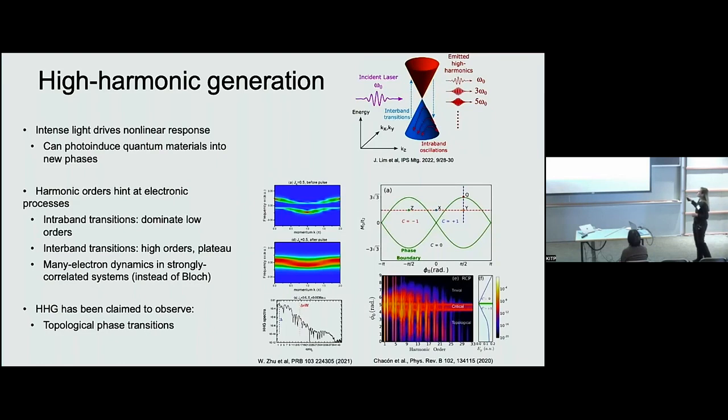It excites inter band oscillations within a band and inter band transitions from one band to the next. And so with certain dispersions and certain configurations of the bands. One can expect that the high harmonic spectrum that you get out might be able to differentiate these eigen energy features. And so the other nice thing about this driving by light or electric field is that this can photo induce quantum materials to new phases.